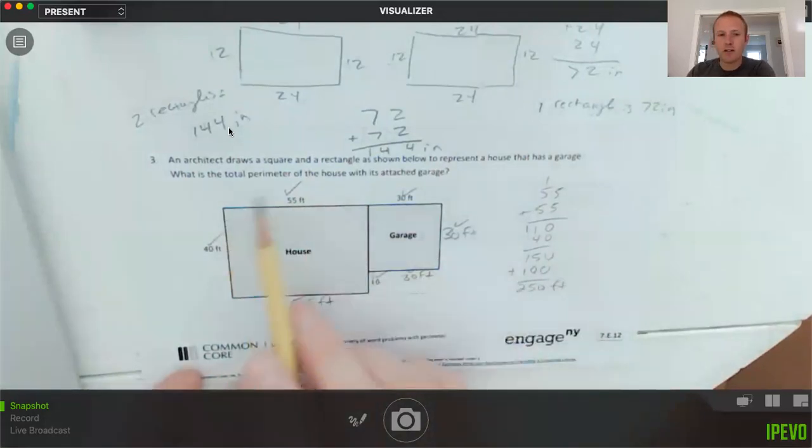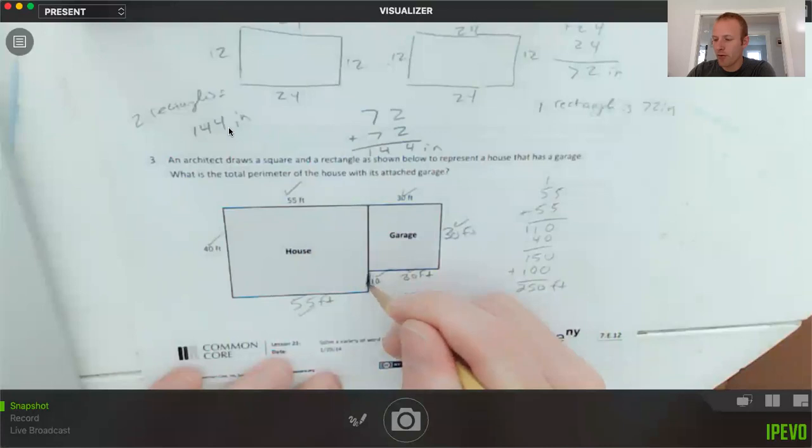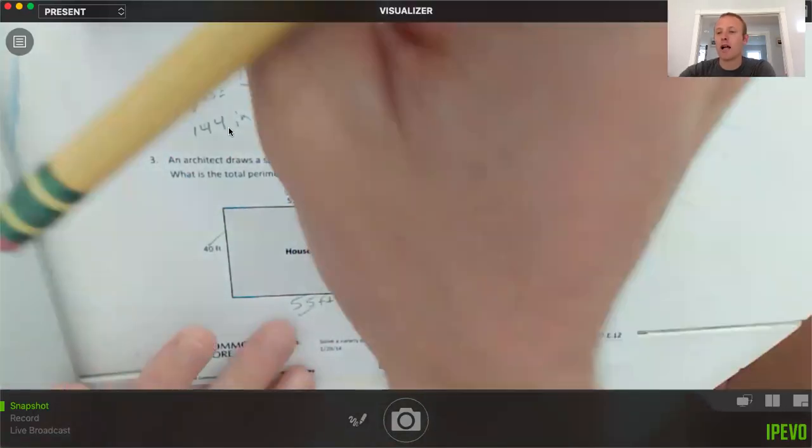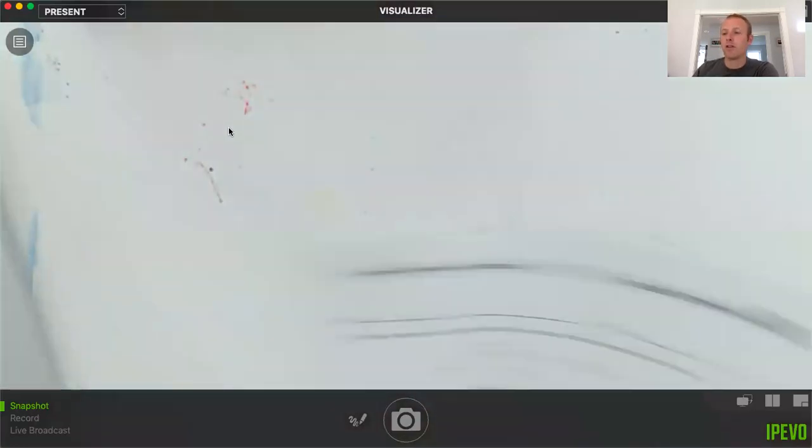So again, just being systematic, going through and checking things off, making sure you get every part. The biggest thing that we see on a problem like this is somebody will miss that length—they'll just forget to include it altogether, or they'll forget to include this length right here. So make sure that you have checked every outside surface of the shape that you were trying to find the perimeter for. That's one of the things where it's important to go back and double check after you're done.